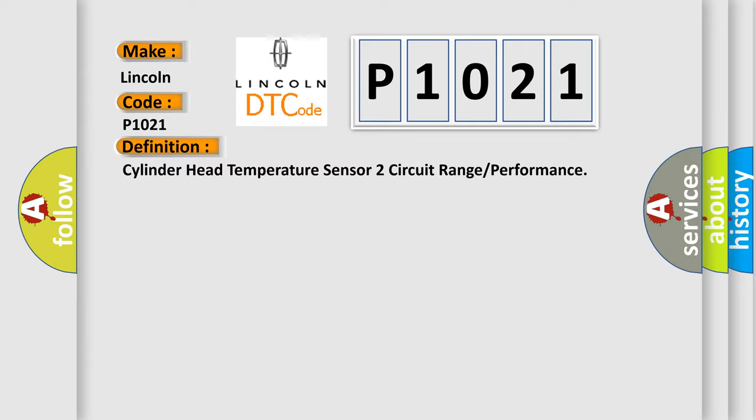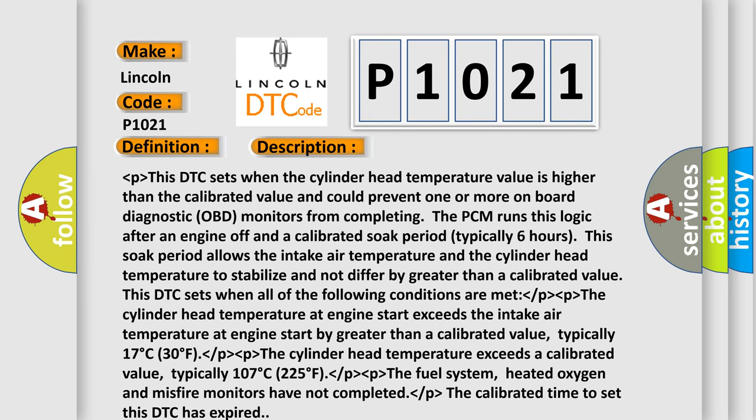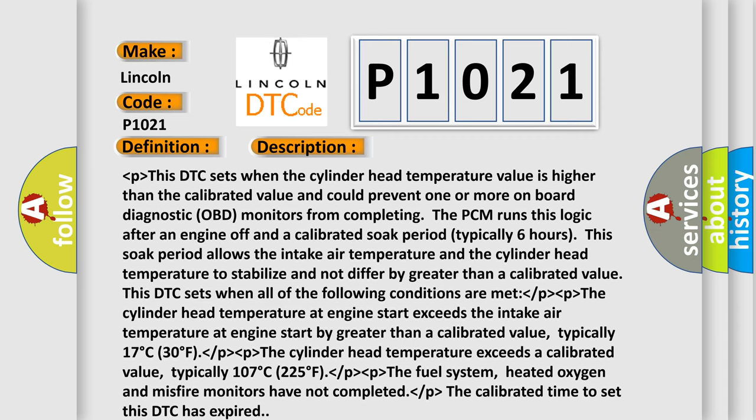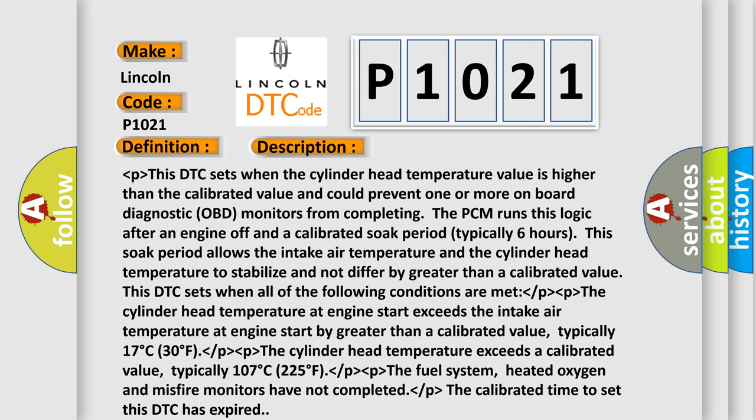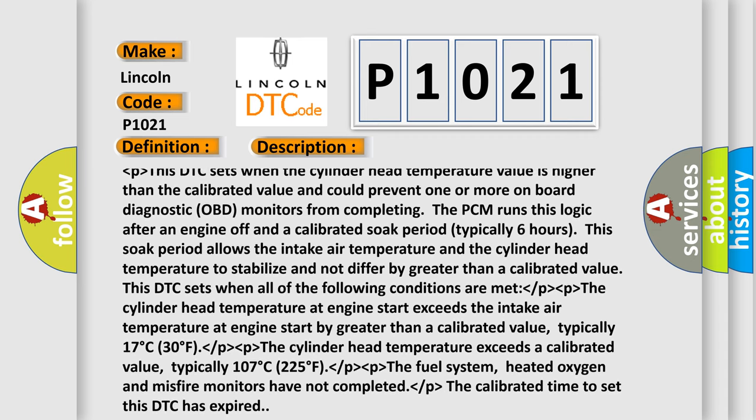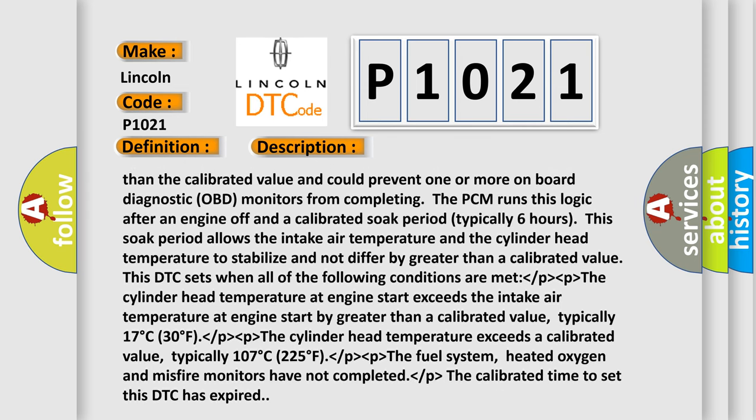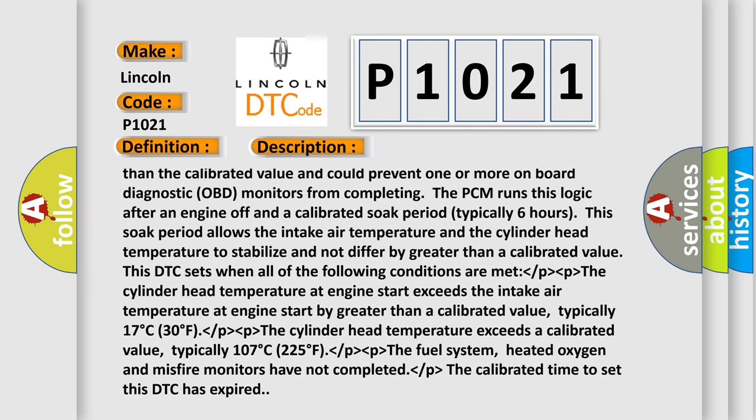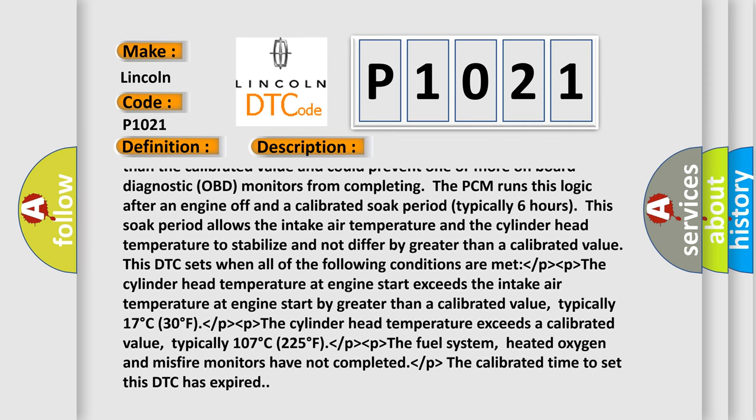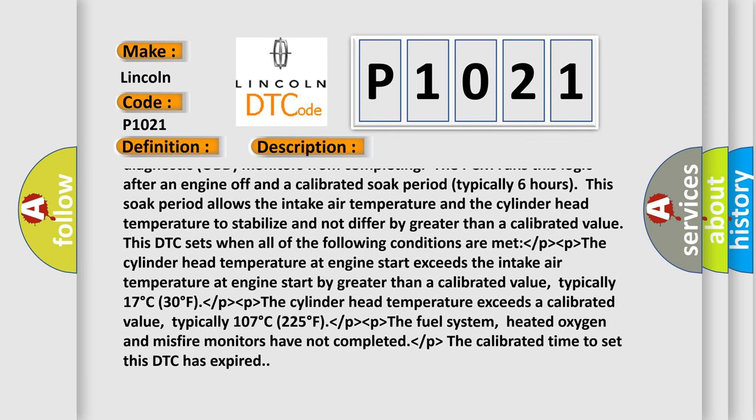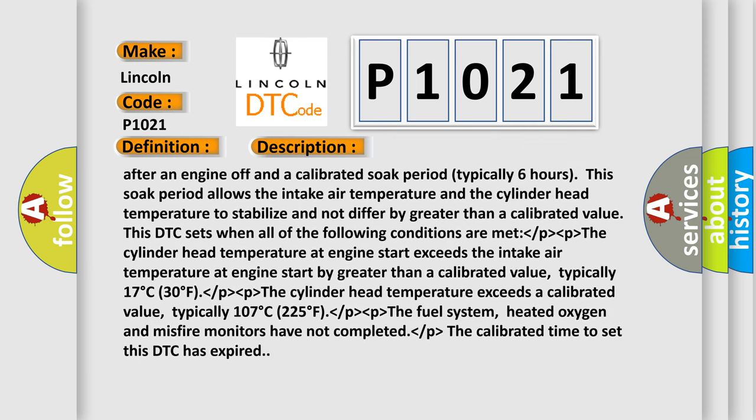And now this is a short description of this DTC code. This DTC sets when the cylinder head temperature value is higher than the calibrated value and could prevent one or more onboard diagnostic OBD monitors from completing the PCM. Runs this logic after an engine off and a calibrated soak period, typically six hours. This soak period allows the intake air temperature and the cylinder head temperature to stabilize and not differ by greater than a calibrated value. This DTC sets when all of the following conditions are met.